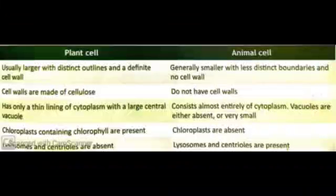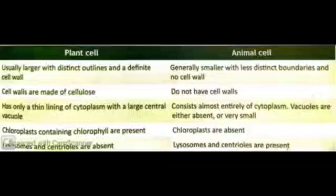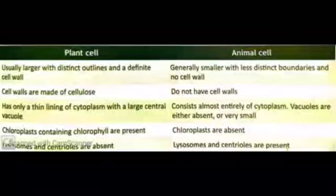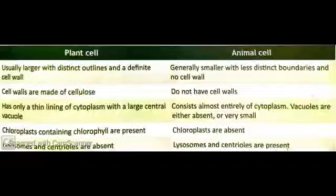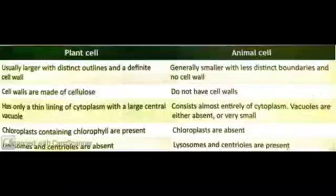Third, plant cells have a very large central vacuole and the cytoplasm occupies a small portion, while animal cells consist largely of cytoplasm and vacuoles are either very small or more in number. Fourth, chloroplasts are present in plant cells but absent in animal cells. Fifth, lysosomes and centrioles are present only in animal cells.